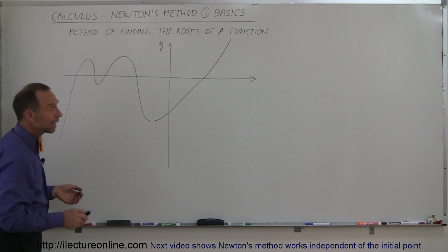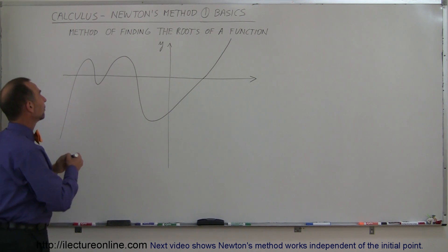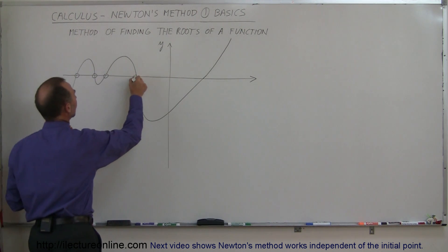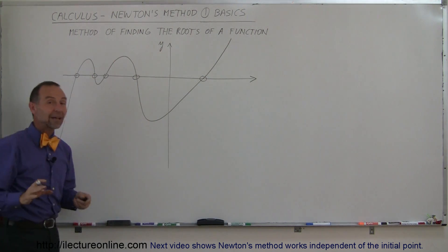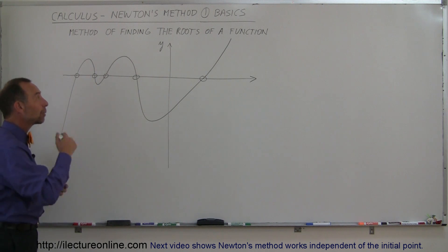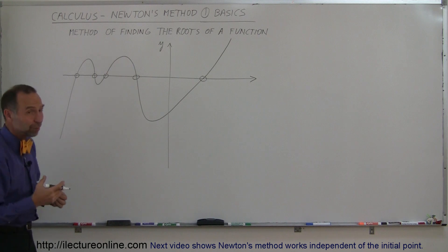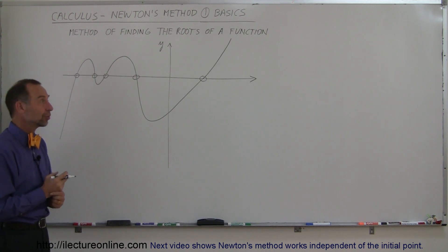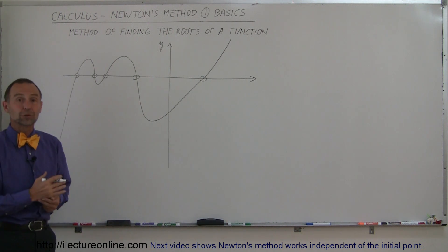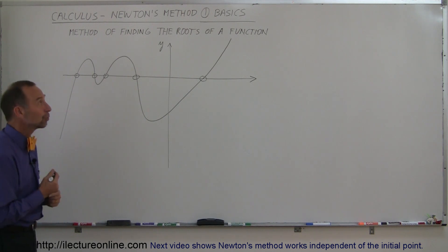Here I have drawn a complicated function. Notice the function crosses the x-axis one, two, three, four, five times. So it has what we would call five roots — five values for x where the value for y would be zero. That would be a fifth order equation, and it would be very difficult to find those five roots algebraically.